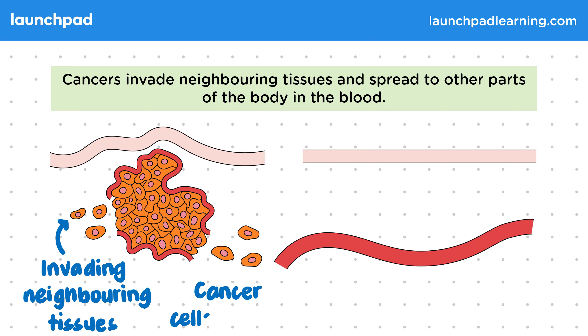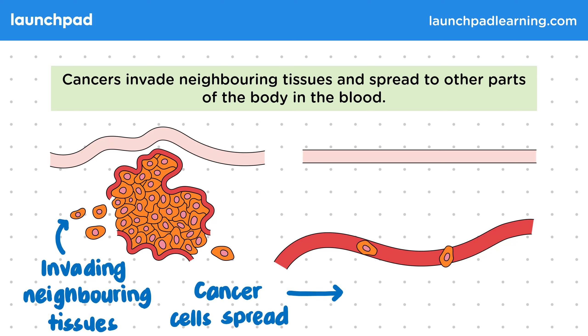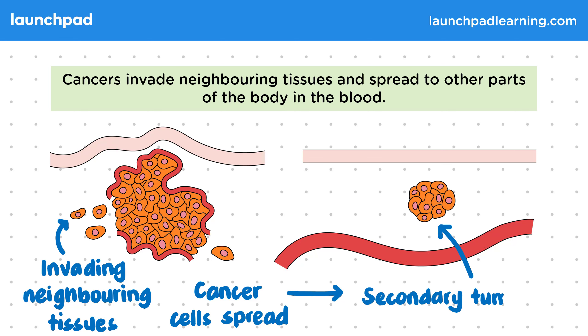Malignant cancer cells can also spread in the bloodstream to other tissues and organs. When this happens, it causes what we call secondary tumours.